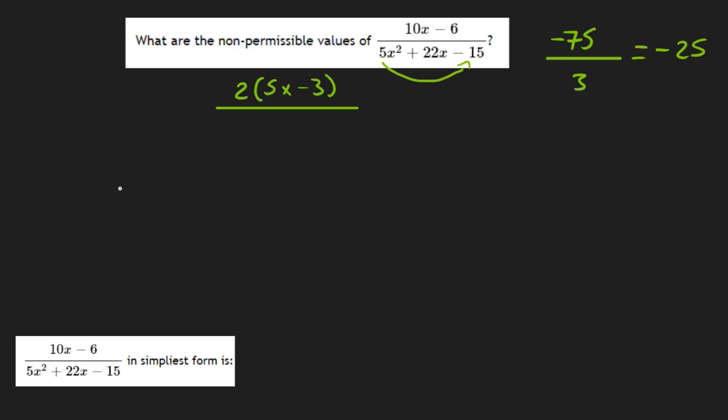But if you make the 25 positive, you'll have negative 3. And if you add that together, you'll make 22. So we factor that.